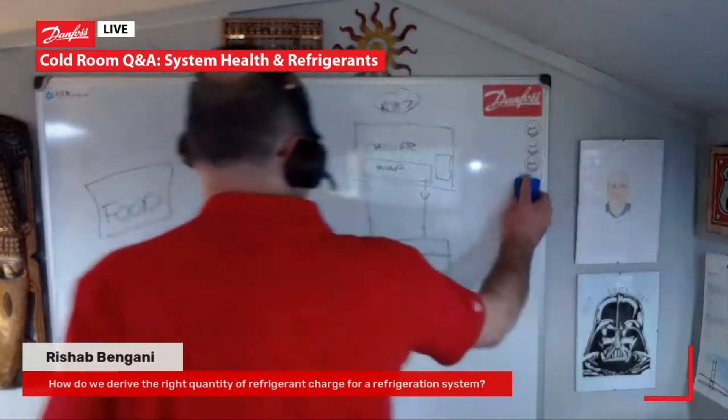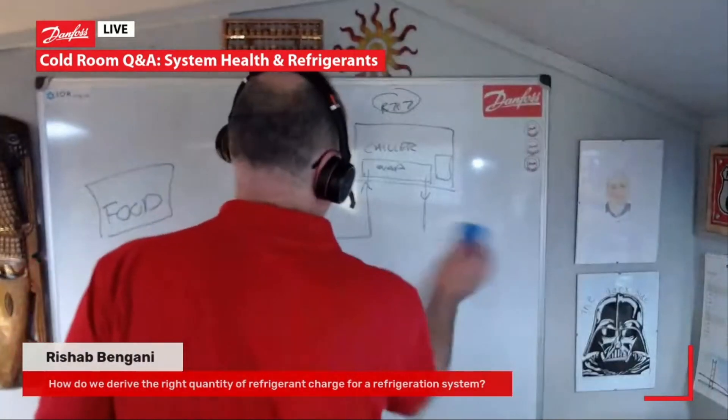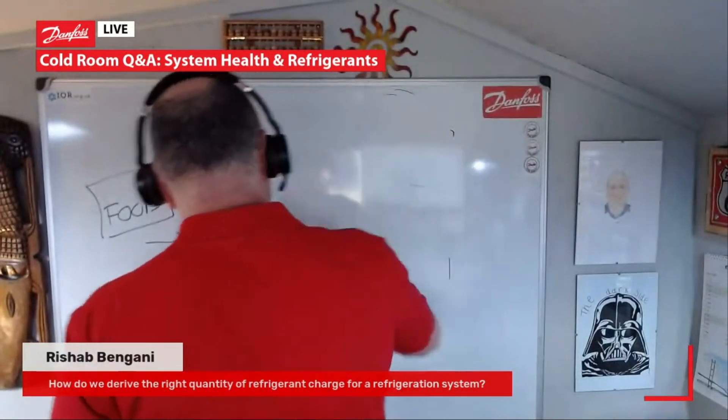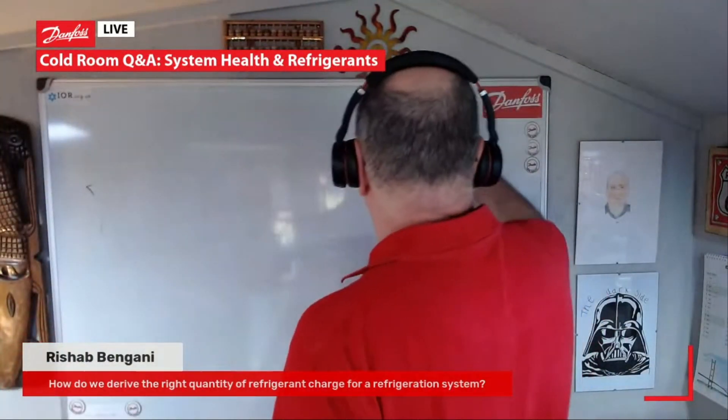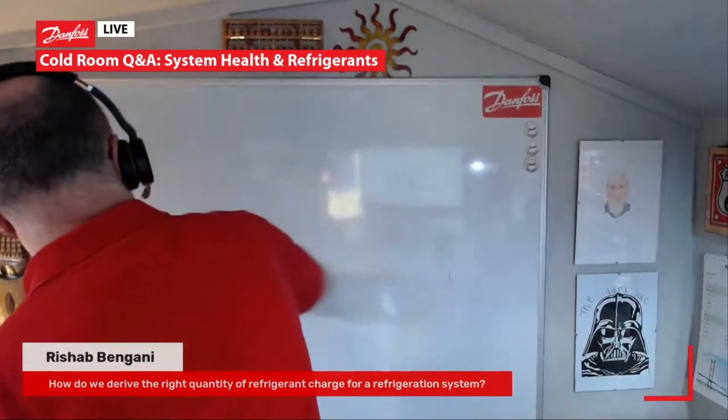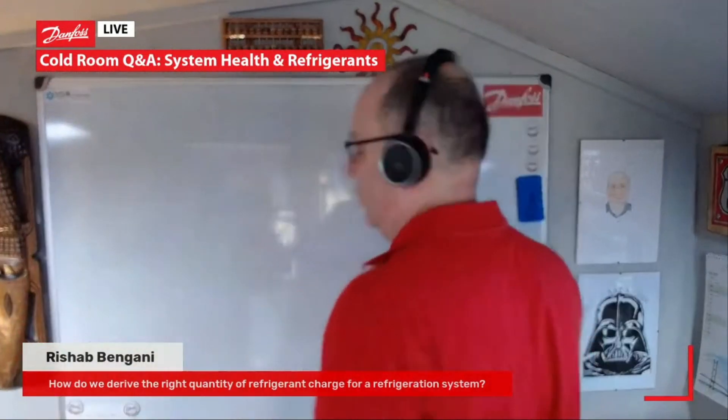Charge is an interesting discussion. When we talk about refrigerant charge, basically you can estimate your charge of your system by the length of the liquid line and the size of that liquid line. And that will give you a base quantity, if you like.